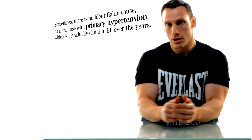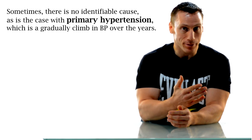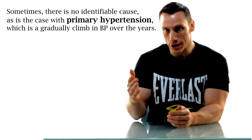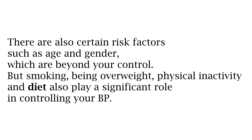What causes high blood pressure? Sometimes there is no identifiable cause, as is the case with primary hypertension, which is a gradual increase in blood pressure over the years as you get older. On the other hand, secondary hypertension is a sudden increase usually caused by an underlying medical condition such as kidney problems, adrenal or thyroid gland issues, or by medications, illegal drug use, or alcohol abuse. Certain risk factors like age and gender are beyond your control, but smoking, being overweight, physical inactivity, and a poor diet play a significant role.